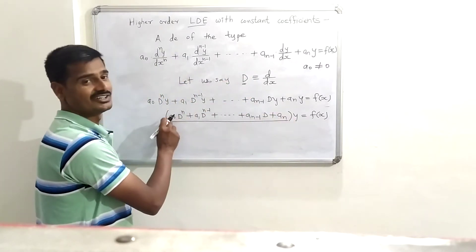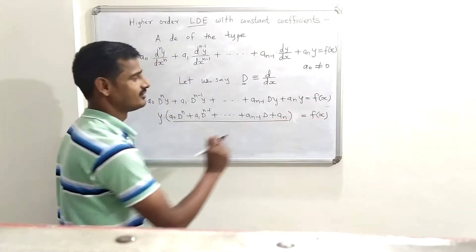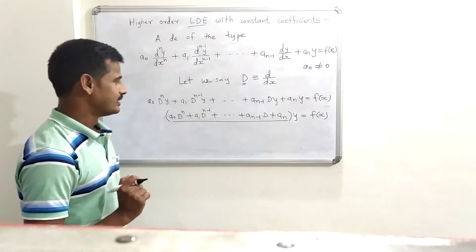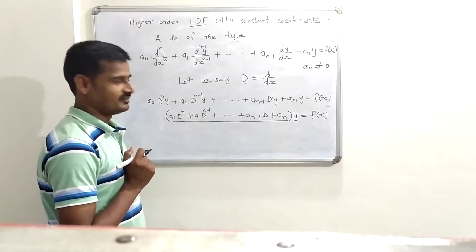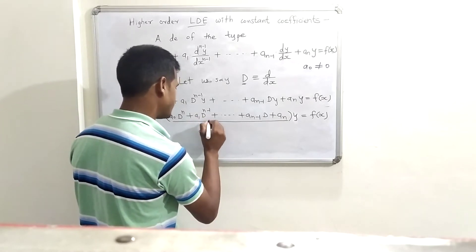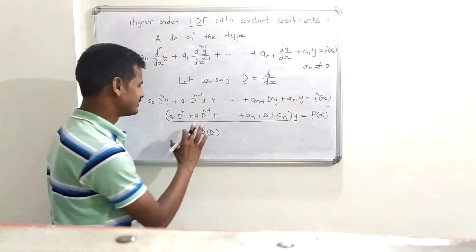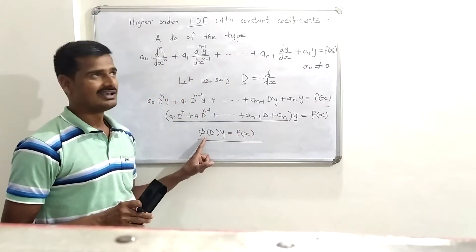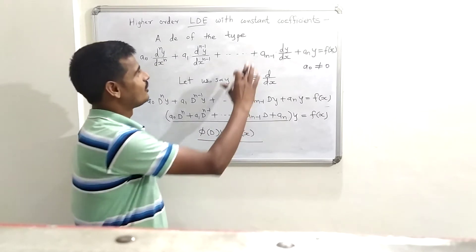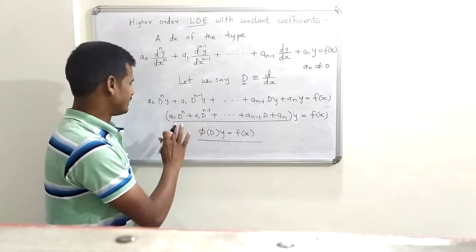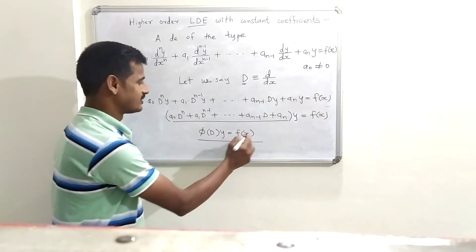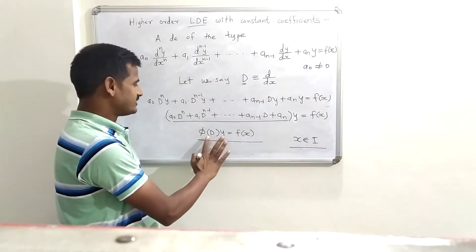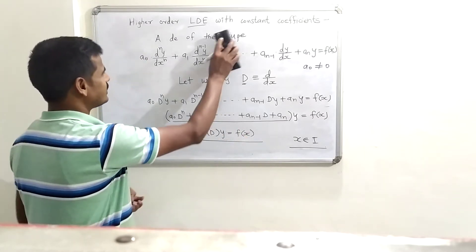You should not write y on the left-hand side of the operator; y must be to the right of the operator. The expression in parentheses is an nth degree polynomial in D, which we write simply as φ(D). So the general form becomes φ(D)·y = f(x). This is the general form of the nth order linear differential equation with constant coefficients. Here φ(D) is a polynomial in D, all coefficients are constants, and f(x) is a continuous function defined on interval I.